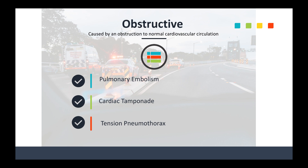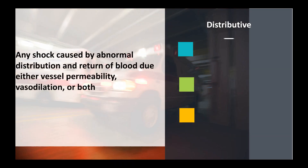Obstructive shock — this used to be categorized differently, but now we talk about things like pulmonary embolisms, cardiac tamponade, and tension pneumothorax. This is the obstruction to normal cardiovascular circulation. When looking at these types of shock, we're asking: is it a tension pneumothorax, is it a cardiac tamponade, is it a pulmonary embolism? What is it causing the obstruction? Those key elements help you understand how the patient might be in shock.